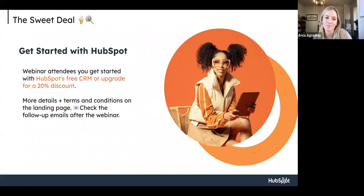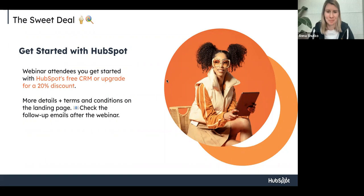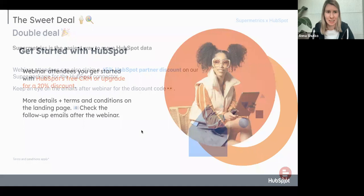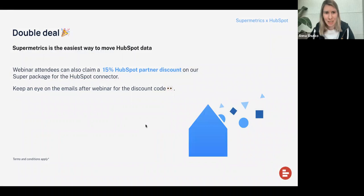It's an amazing deal — I highly recommend starting your HubSpot journey with that. We also couldn't leave you without a deal from the Supermetrics side. We are offering a 15% partner discount on our SuperPackage for the HubSpot Connector. You can try it out and see which data destination and product works best for you. Keep an eye on the emails after the webinar to see the discount code, so you can get started with both HubSpot and Supermetrics to build your whole reporting funnel.